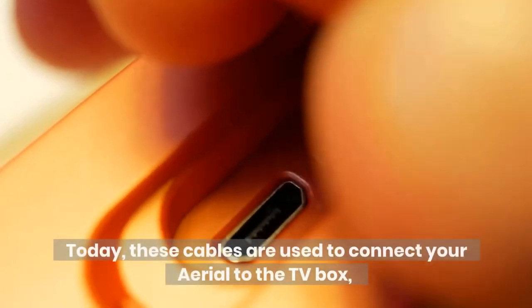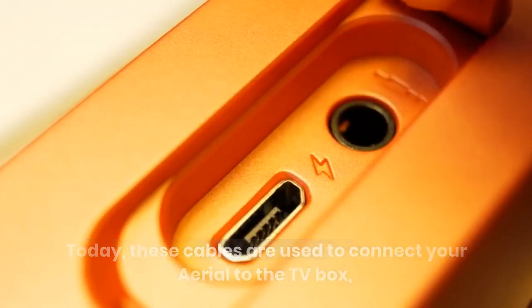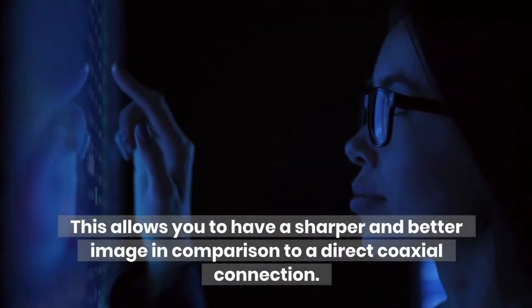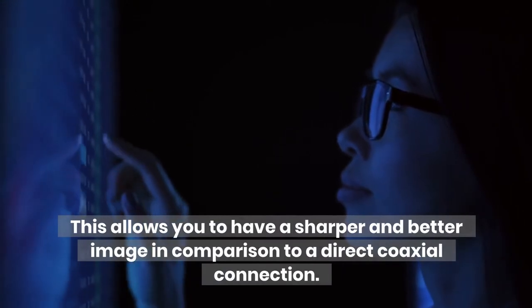Today, these cables are used to connect your aerial to the TV box, but then the TV box connects to the TV via HDMI. This allows you to have a sharper and better image in comparison to a direct coaxial connection.